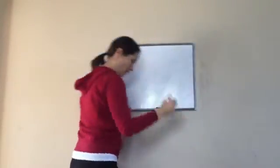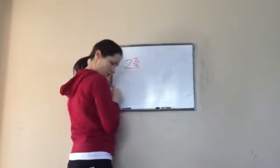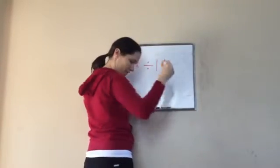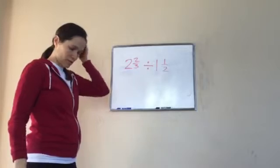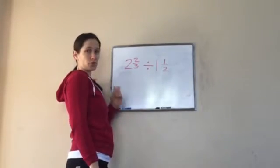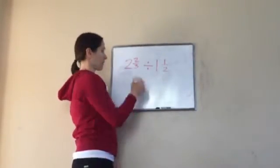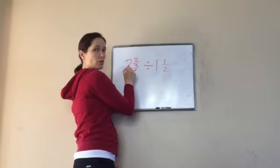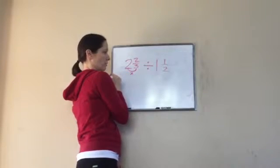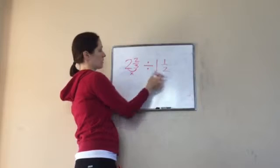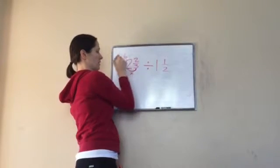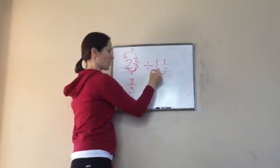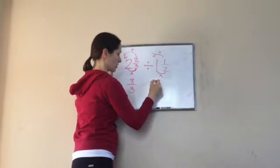Okay, do this one with me on your paper. So 2 and 2 thirds divided by 1 and 1 half. Okay. So tell me what to do first. We make it improper. Okay so let's do this. So it would be 3 over 2 for the 1 half. 3 times 2. Oh we're doing that one first, well whatever. I always go from left to right. Yeah that's fine. Okay so 3 times 2 is, 3 times 2 is 6, then 8 over 3 and 3 over 2. Okay, 2 times 1 is 2, 2 plus 1 is 3. Good.